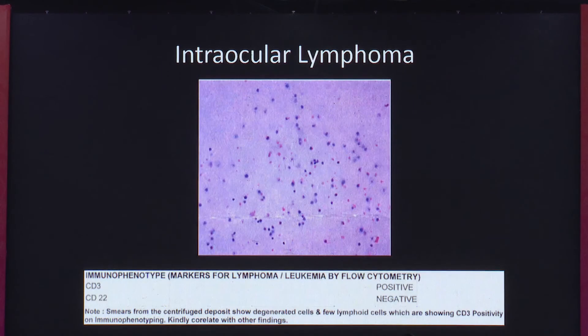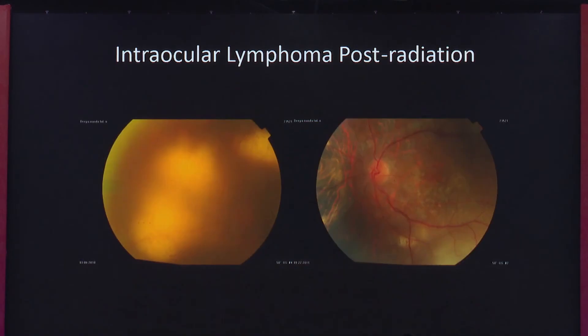In this situation, what we would do is a vitreous biopsy. Here we did a vitreous biopsy as well as a sub-retinal biopsy — we did a small retinotomy and removed what was there underneath, which did indeed prove to be intraocular lymphoma. Post-radiation, you can see the vitreous cavity is clear and all the lesions have regressed.